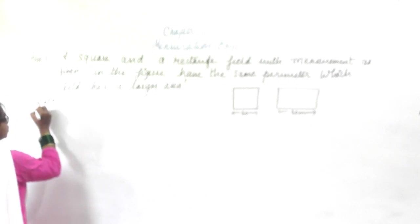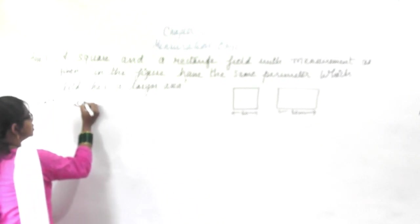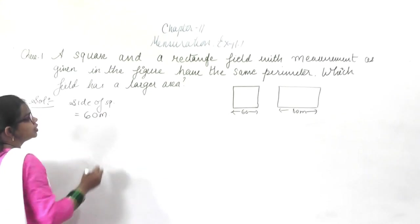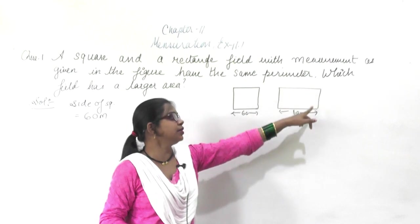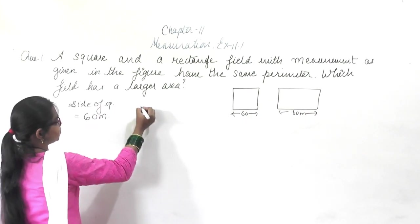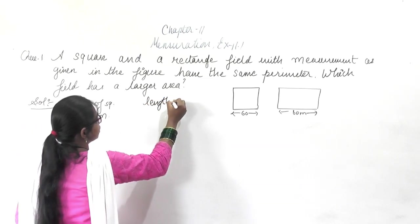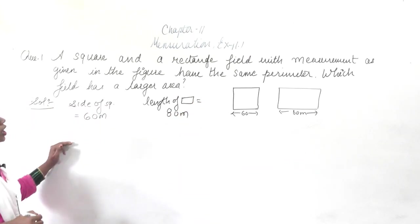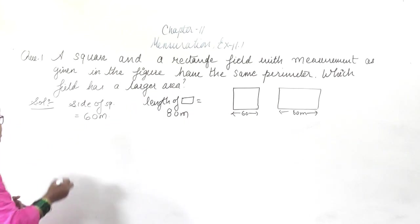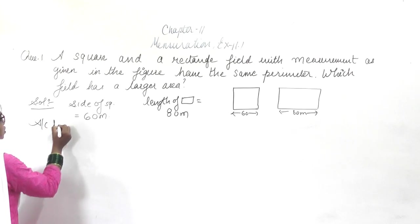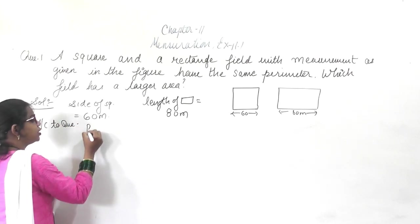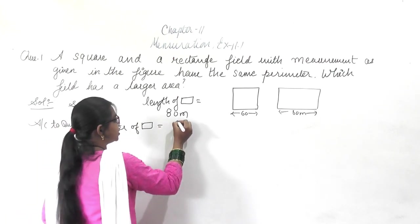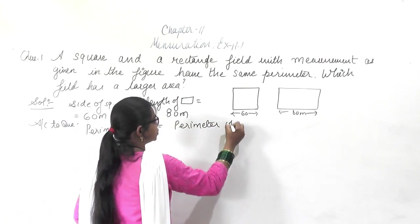What is given to you? The side of the square is given as 60 meters. Similarly, this is the length and this is the breadth. The length of the rectangle is equal to 80 meters. According to the question, they have the same perimeter, so the perimeter of the rectangle is equal to the perimeter of the square.